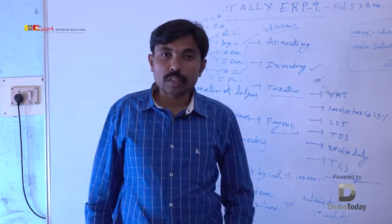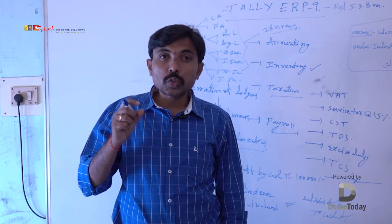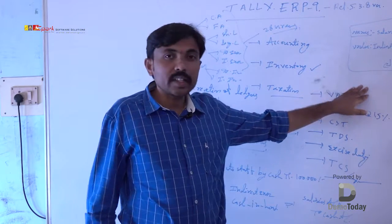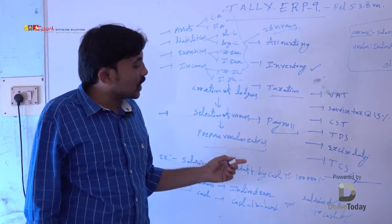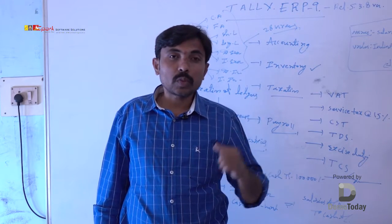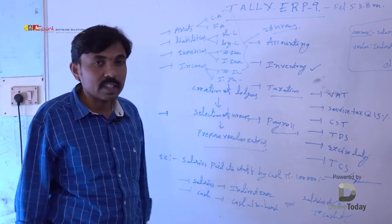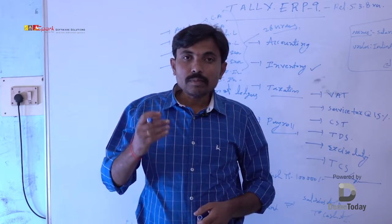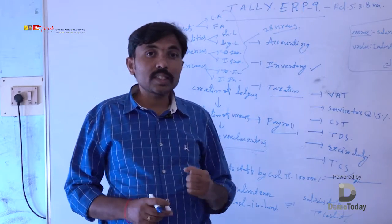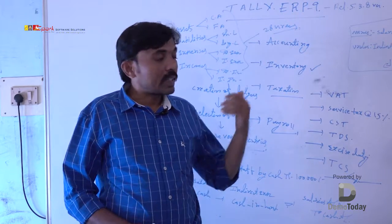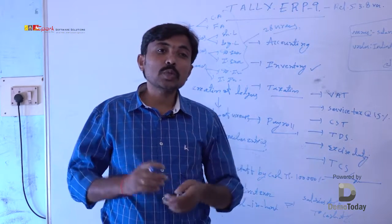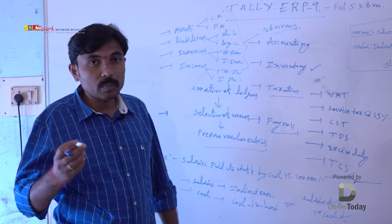Sales voucher is used for creation of goods sold transactions, either cash-based or credit-based. Goods sold transaction entries are created in sales voucher. Purchase voucher is used for creation of goods purchase transactions — for example, purchased 10 color TVs at the rate of 20,000 each from LG company. Debit note is used for purchase returns — purchase return transaction entries are created in debit note, for example returning goods to RK company. Credit note is used for sales returns — when our company sells goods to a customer and the customer returns them due to inferior quality or damage.